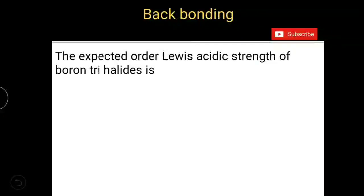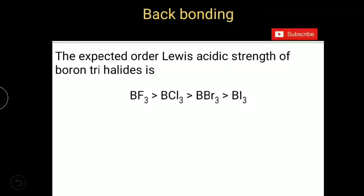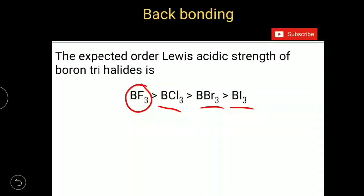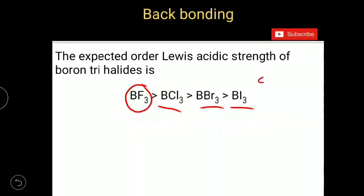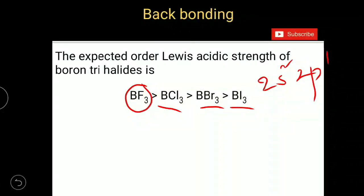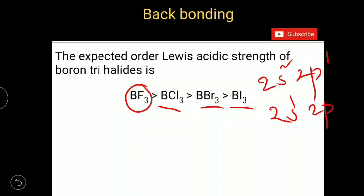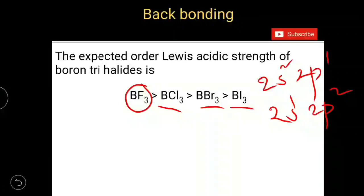The expected order of Lewis acidic strength of boron trihalides is that boron trifluoride should be the strongest acid among all boron trihalides — stronger than BCl3, BBr3, and BI3. Because in boron, the outermost electronic configuration is 2s2, 2p1. In the excited state, one electron from 2s will go to 2p, so there is still a vacant orbital in 2p.